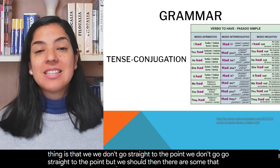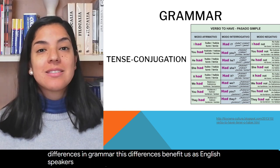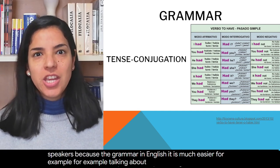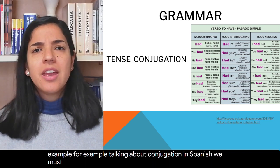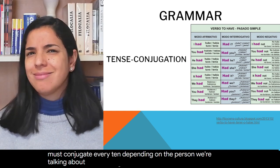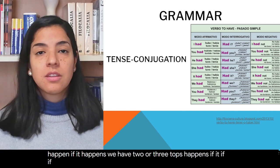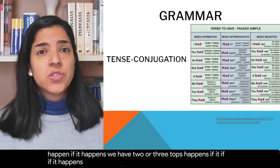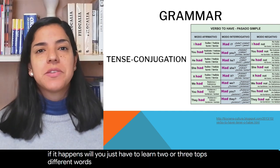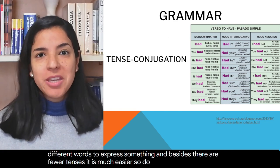Then there are some differences in grammar. These differences benefit us as English speakers because the grammar in English is much easier. For example, talking about conjugation: in Spanish we must conjugate every tense depending on the person we are talking about, and in English this happens much less. We just have to learn two or three tops, different words to express something. And besides, there are fewer tenses — it is much easier. So do not be afraid of grammar.